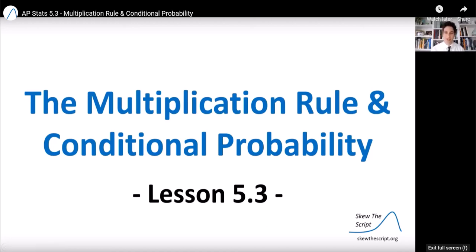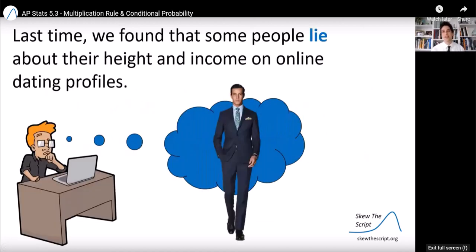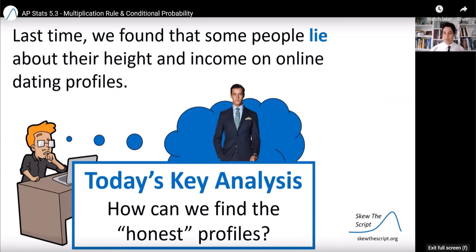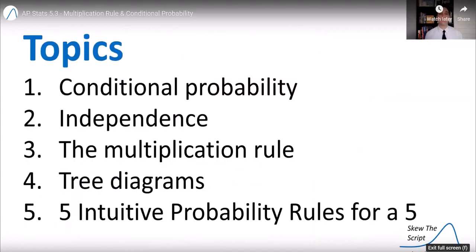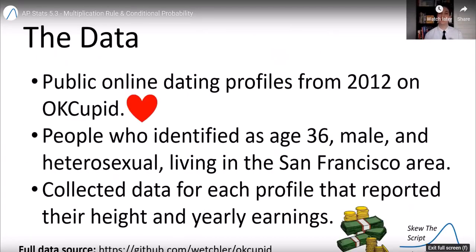Today's lesson is on the multiplication rule and conditional probability. Last time, we found that some people are probably lying about their height and income on their online dating profiles. This time, we're going to ask how can we find, if we're using this site, just the honest profiles? How can we find honest potential return matches? So today we're going to talk about, first, conditional probability.